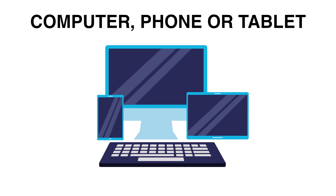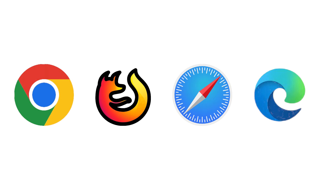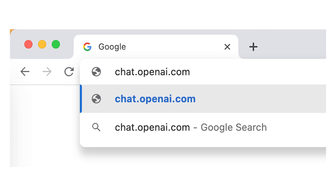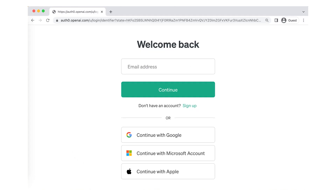Let's explore getting ChatGPT on your devices. After you've created your ChatGPT account, you'll want to have it ready to use wherever you go — whether you're on a computer, phone, or tablet. You can use ChatGPT on any device with a web browser. Open your browser, type in chat.openai.com, enter your ChatGPT account details, and you're good to go.